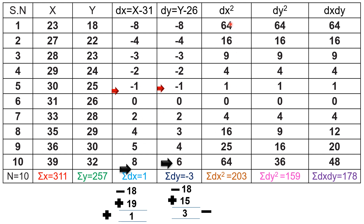Now calculate dx²: 8² = 64, 4² = 16, 3² = 9, 2² = 4, 1² = 1, 0² = 0, 2² = 4, 4² = 16, 5² = 25, 8² = 64. Adding all these values gives sigma dx² equals 203.